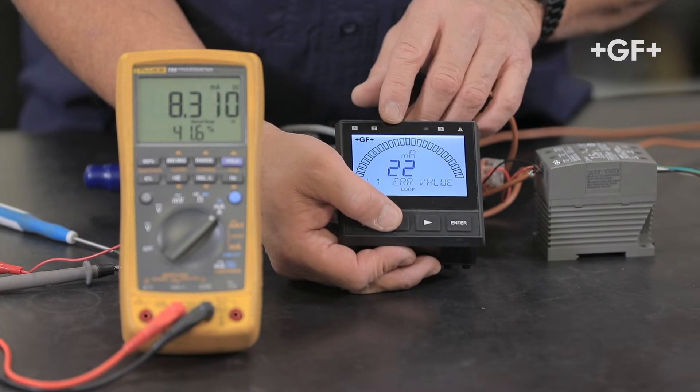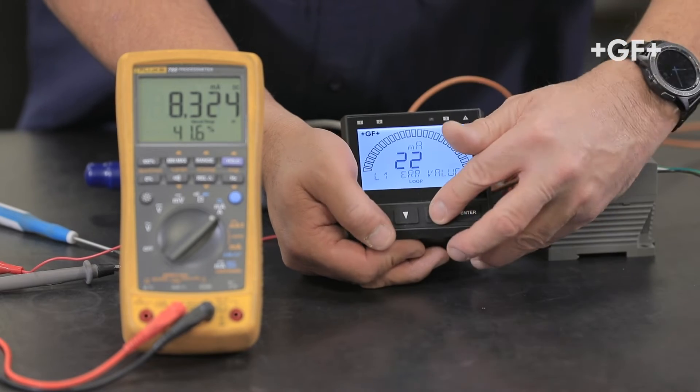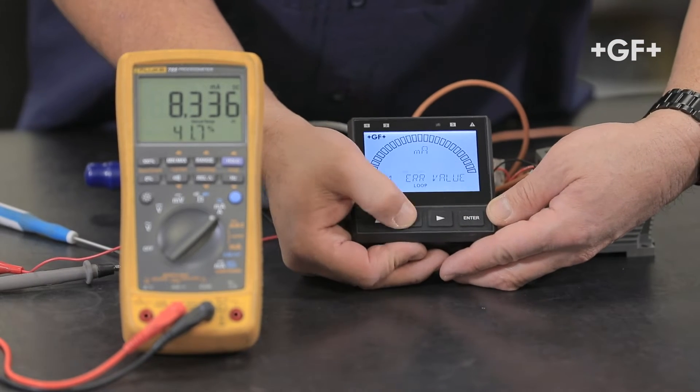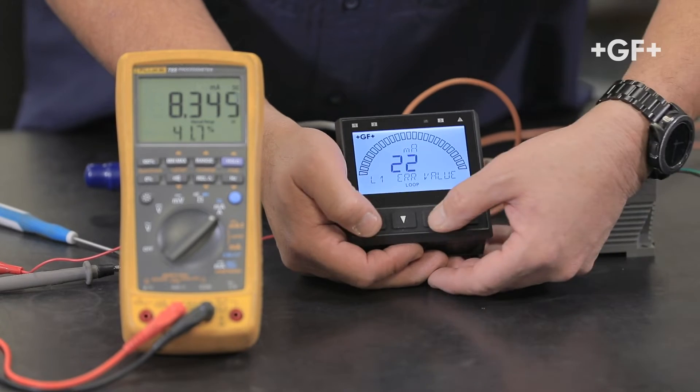This has an error, so I can have the error either set to 22 milliamps or 3.6. Okay, so we'll leave it at 22.